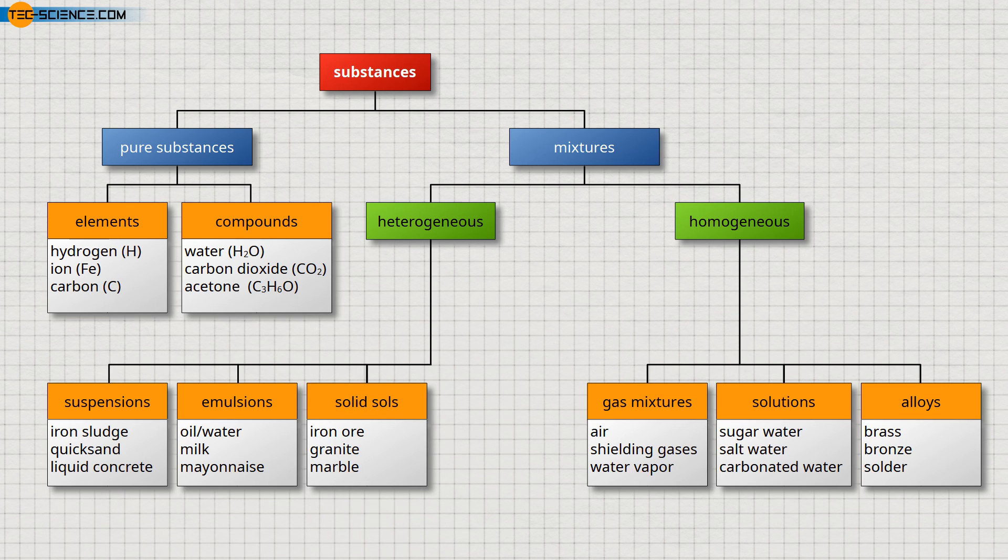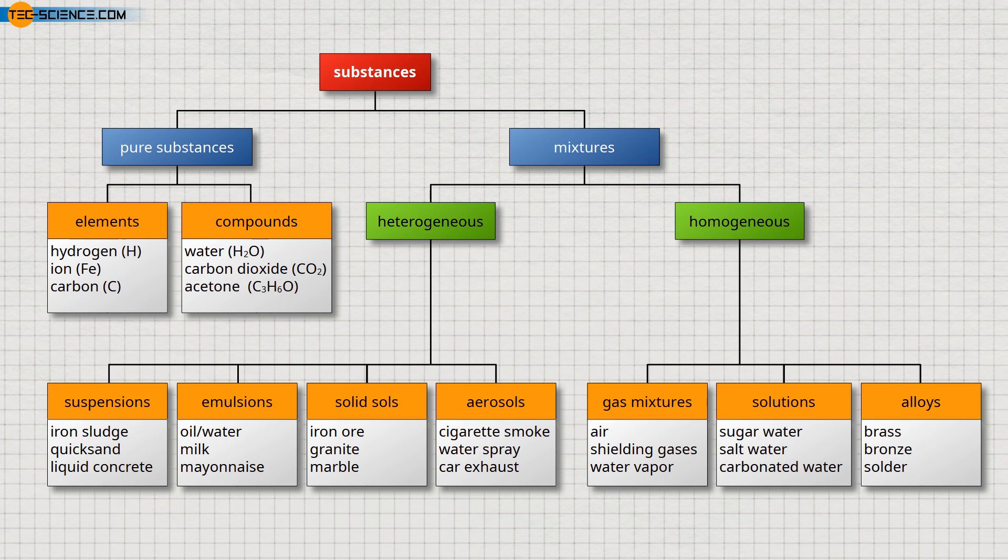Another category of heterogeneous mixtures are aerosols. These are mixtures of solids or liquids in gases. Examples of aerosols are cigarette smoke in air, clouds in atmosphere, or car exhaust fumes in air.